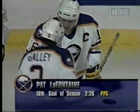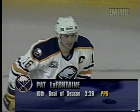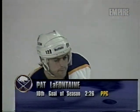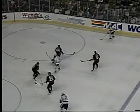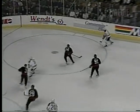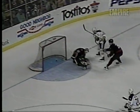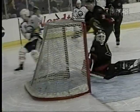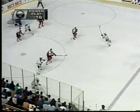Power play goal — 2-1 Buffalo. This looks like a soft backhand pass. LaFontaine goes to the net, puts his stick on the ice, and tips it by the goaltender. And the Sabres have taken the lead on the power play goal here in the third period. Gorgeous passing play, and LaFontaine scores.